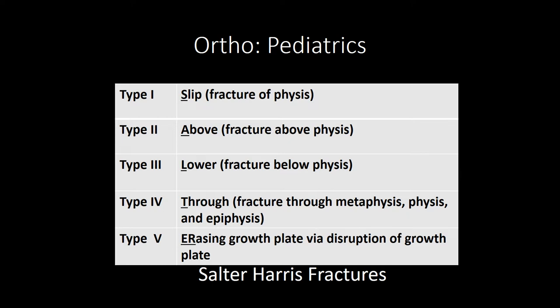For Salter-Harris fractures, these are fractures that can affect the growth plate, and if they are not treated, they can complicate growth and stunt it. These often occur in long bones. There's a mnemonic: type 1 through 5 spells out SALTER. Type 1 is slip, 2 above, 3 lower, 4 through, and 5 is erasing or disruption of the growth plate — usually a compression injury.